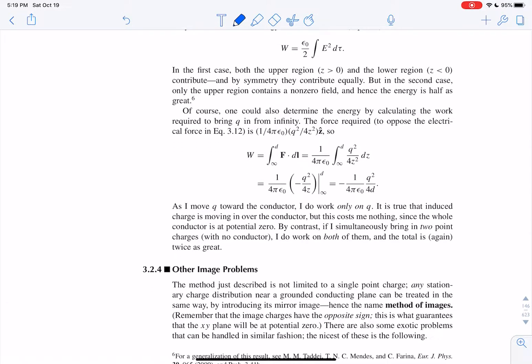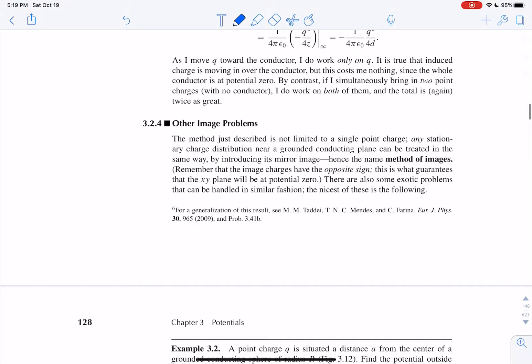And again, it's because that method of images, you've got to be careful. It's not actually plus q and minus q separated by 2d. It's plus q and minus q separated by 1d. And so that's why that's the case. And you can see here by doing f dot dl, and so on.